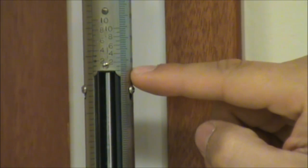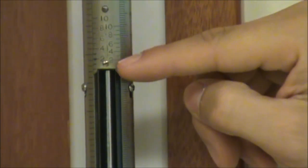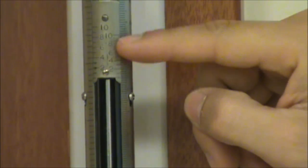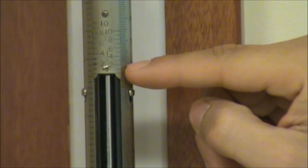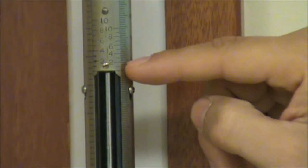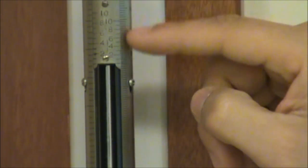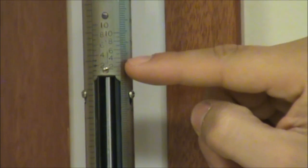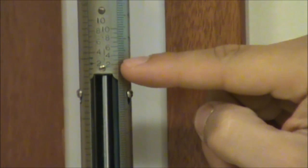In order to achieve that estimated digit, we're going to use the scale on the vernier. We want to find the marking on the vernier that lines up perfectly with the scale on the side of the barometer right here. If we look, it looks like the three marking lines up with the scale on the barometer perfectly, indicating that our estimated digit is a 3.